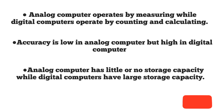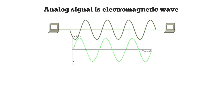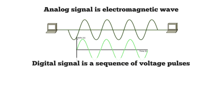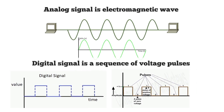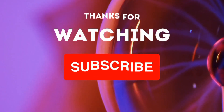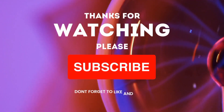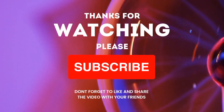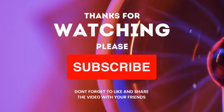Analog computers have little or no storage capacity, while digital computers have large storage capacity. The signal type for analog computers is electromagnetic waves, while for digital computers it is a sequence of voltage pulses. Analog computers are slow, while digital computers are fast. Analog computers are less expensive than digital computers. Thank you for watching — please subscribe to our channel, see you in the next video.